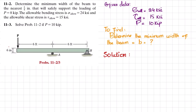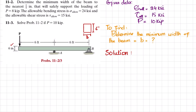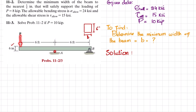The height of the beam is 6 inches and the width b is what we need to find. This is an overhanging beam. The loading at the end is P, there is a roller support at point A and a pin support at point B. If we remove the roller support, there will be a reaction force Ra acting downward, and if we remove the pin support at point B, the reaction force Rb will also be downward.